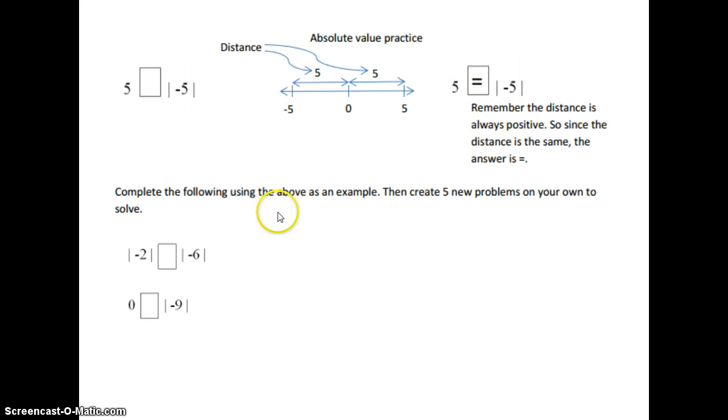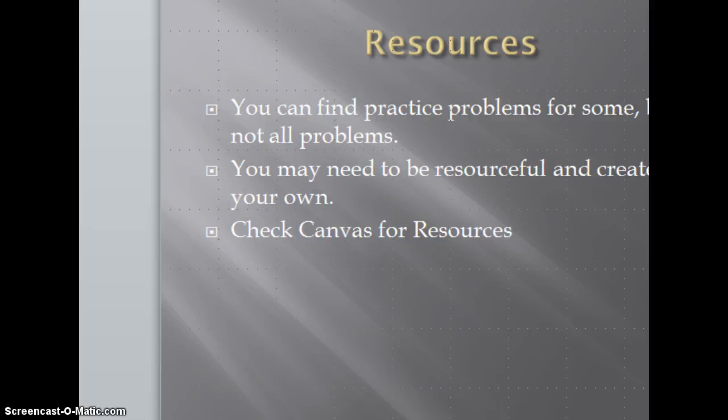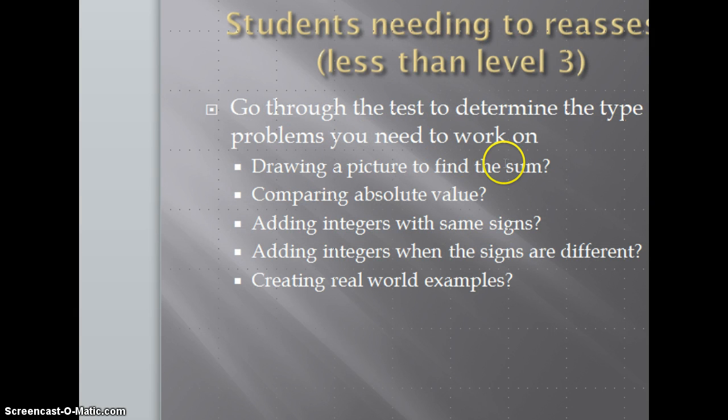You're going to be asked to do this for these two problems and then you'll need to create 5 new problems on your own to solve. And this is only for students that need the practice with the absolute value. So you're going to need to determine what kinds of problems that you need work on. Again, if you need work on drawing a picture to find the sum, that might be something that you'll need to do. Comparing absolute value, adding integers with the same signs when the signs are different, creating real world examples.